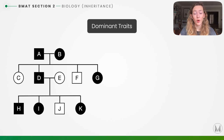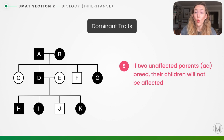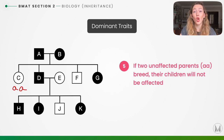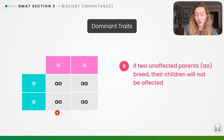If C breeds with an unaffected partner, because C is unaffected it must be homozygous recessive (aa), as is their partner. There are no dominant alleles available, so 100% of their offspring will also be homozygous recessive — none of them will have the condition. This is shown in the Punnett square: no dominant alleles appear, so none of the offspring will be affected.